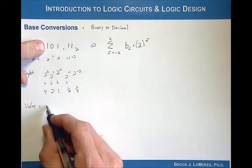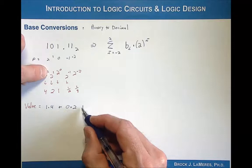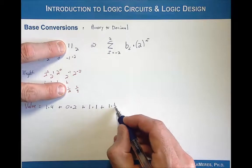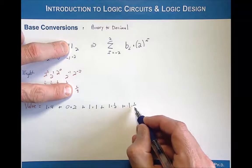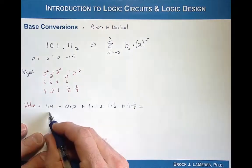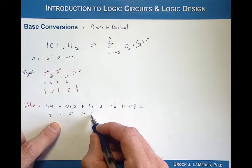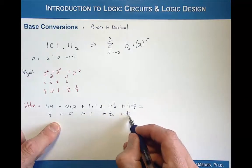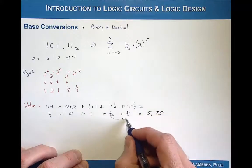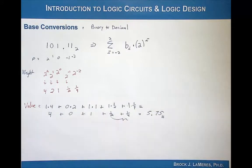We have 1 multiplied by 4, which is the value that bit contributes, then 0 multiplied by 2, then 1 multiplied by 1, then 1 multiplied by 1 half, and then 1 multiplied by 1 fourth. Summing all those together: 1 times 4 is 4, plus 0, plus 1, plus 1 half, plus 1 fourth. Adding those up, we're left with 5.75. So 101.11 base 2 equals 5.75 in decimal, and that's correct.